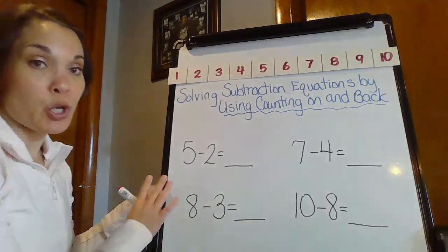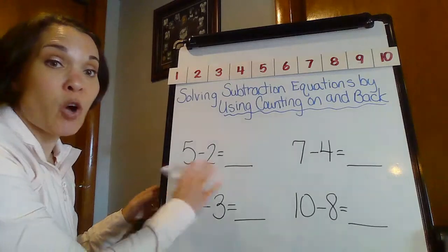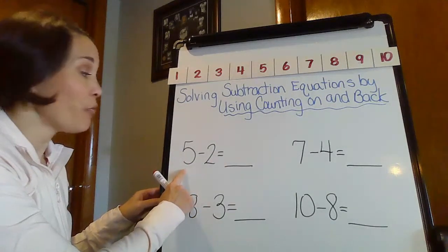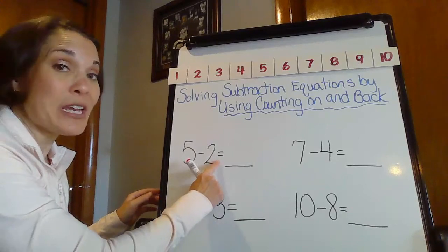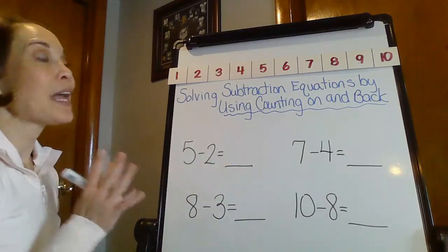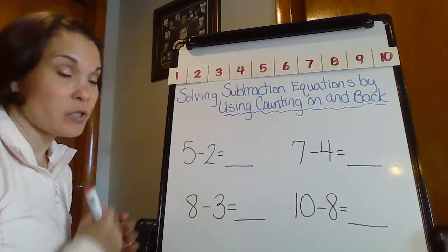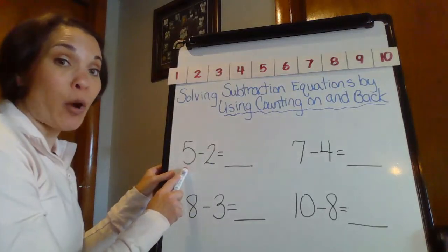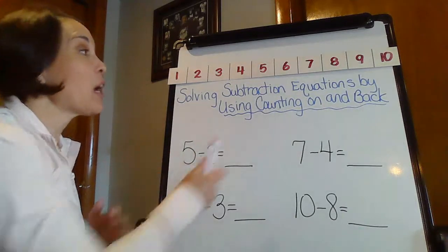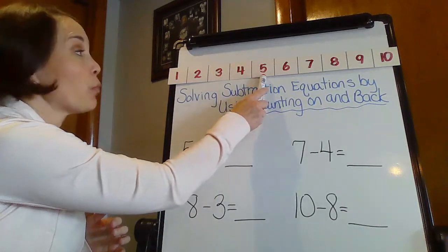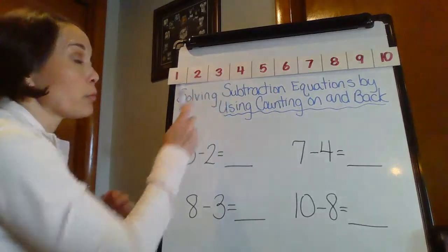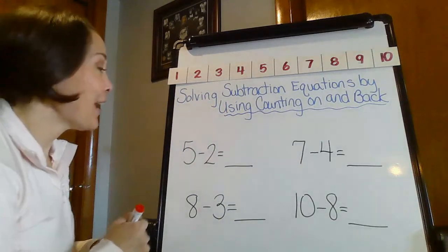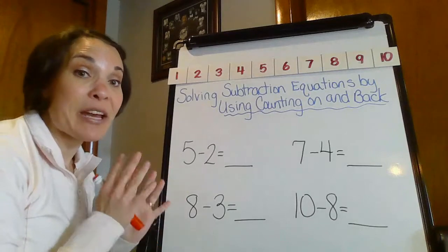So what we're going to do, we are going to solve each one of these. And first, we're going to start with five minus two equals. So let's do the counting back strategy first. So I have five take away two, I want to start with my whole, I want to start with that big number, and I'm going to count back to one, two. All right, so we have three. So that is what's going to be my difference.